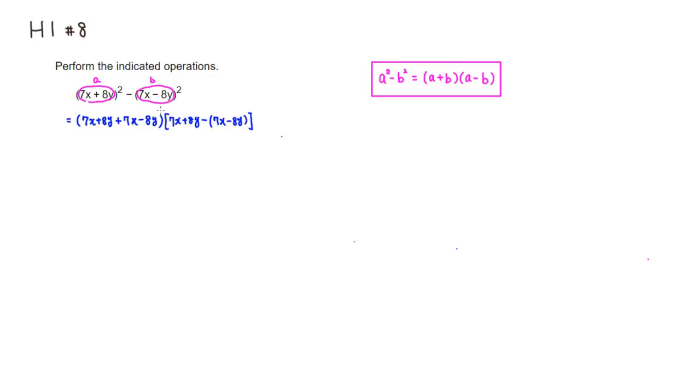So let's simplify. In the first set of parentheses, you can see that there's a positive 8y and a negative 8y - they cancel each other out. So what we have is just 7x plus another 7x, so there's going to be 14x from there.